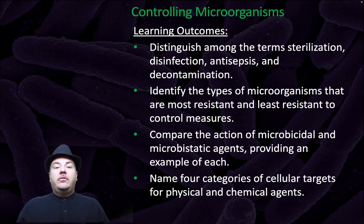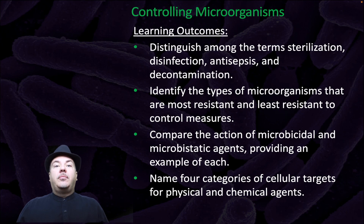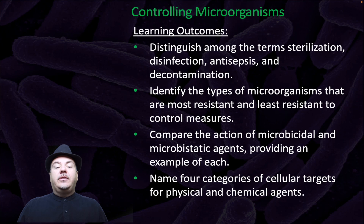By the end of this video, you should be able to distinguish among the terms sterilization, disinfection, antisepsis, and decontamination. Identify the types of microorganisms that are most resistant and least resistant to control measures. Compare the action of microcidal and microstatic agents, providing an example of each. Name four categories of cellular targets for physical and chemical agents.